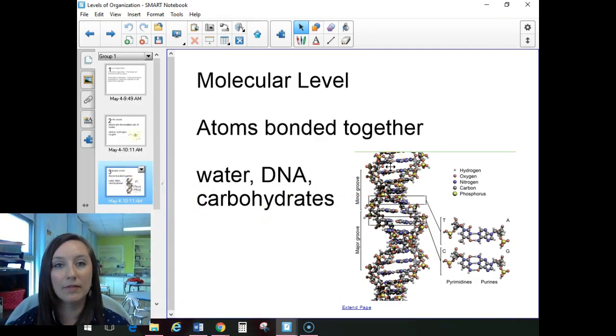Molecular level, we're going to move through these basic levels pretty fast because we've been covering them for quite a bit of time now. The molecular level, we know now we're taking those atoms, we're bonding them together, and they're making a molecule. Some of the really important molecules that we deal with are water, DNA, and carbohydrates. We've talked a lot about those. In life science, we can see DNA is made out of hydrogen, oxygen, nitrogen, carbon, and phosphorus. You can kind of see how those are put together. So go ahead and add that level to your graphic organizer.